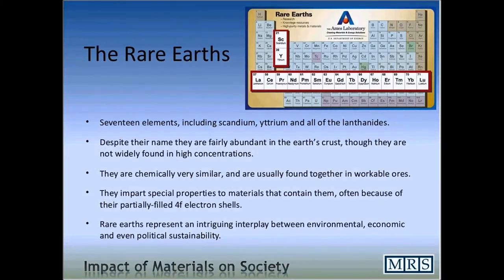We're going to talk a little bit today about the rare earths. The rare earths is an interesting group of materials — they're the ones highlighted in the periodic chart. There are 17 elements including all of the lanthanides, which is the first of the two rows that hang off at the bottom of the periodic table. Typically, people also include scandium and yttrium, which are not truly rare earths and certainly not lanthanides, but they're usually considered to be part of the group.